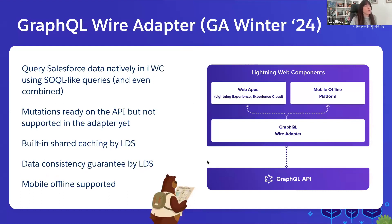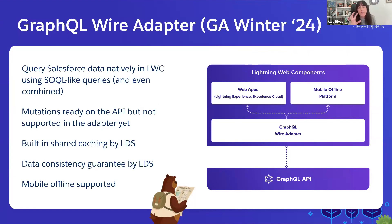The GraphQL wire adapter is a wire adapter you can use in LWC to retrieve data through the GraphQL API. It has many benefits — in GraphQL queries, you can combine queries to multiple objects and send everything in a single server roundtrip, making it very efficient.